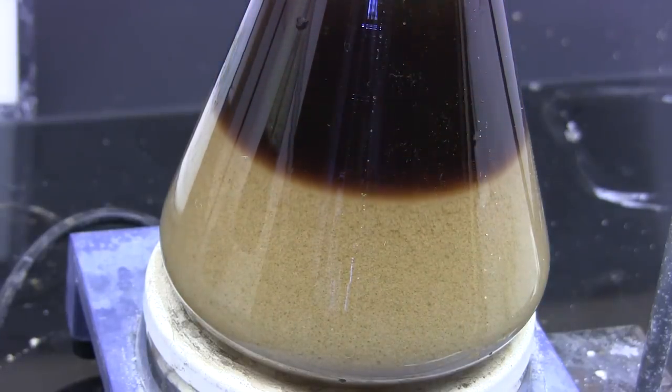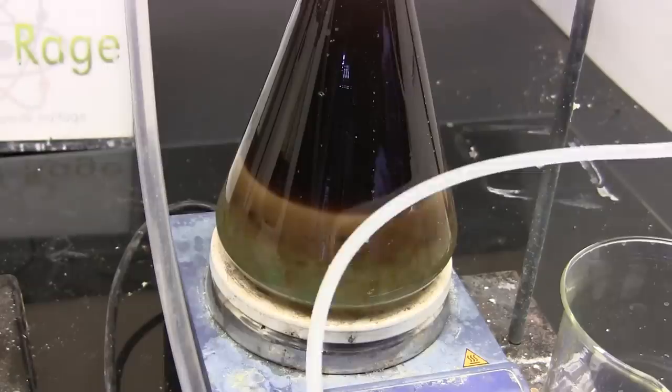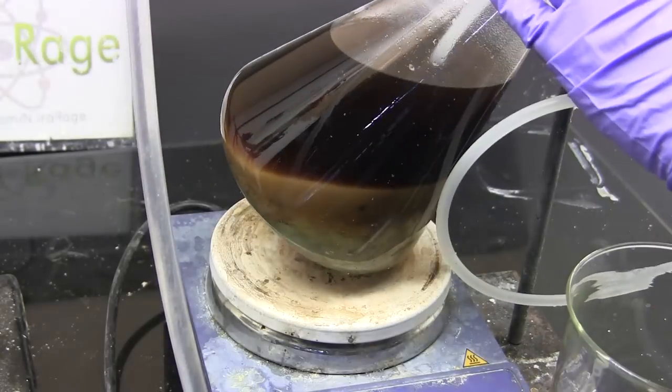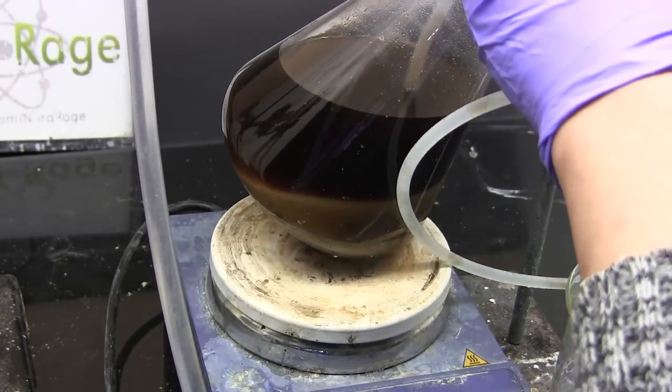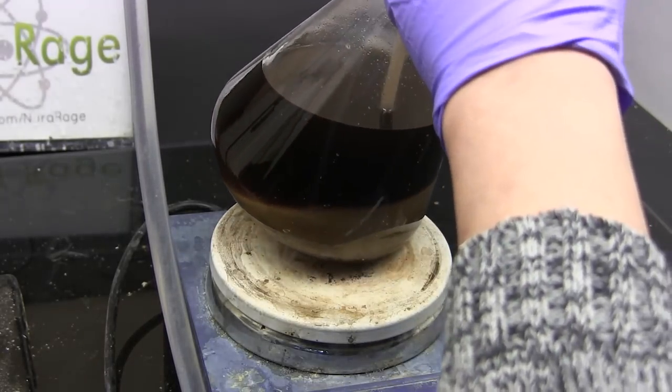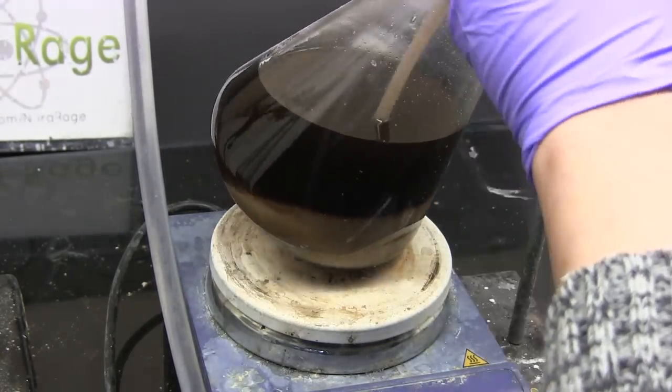Turn off the stirring and let the layers separate. Now we remove the lower aqueous layer. If you have a separatory funnel that can handle a liter of solution then use that. I don't so I'm just going to use a tube and siphon out the bottom layer.